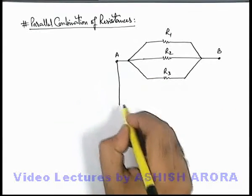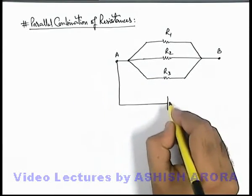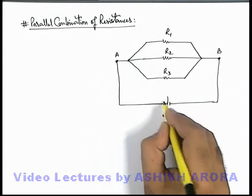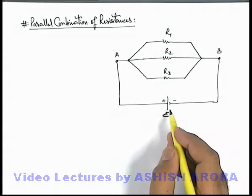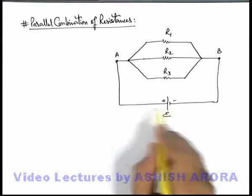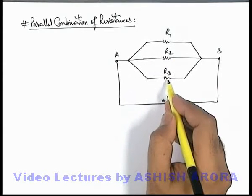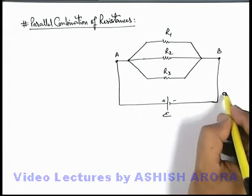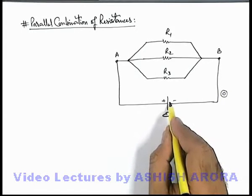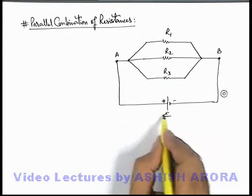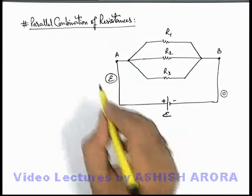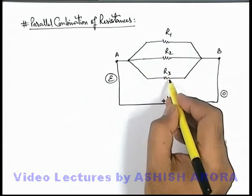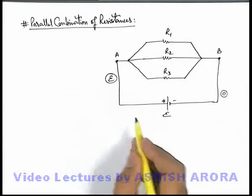To find the equivalent resistance, say we connect a battery across the combination, and the battery is of EMF e. In this situation, a potential difference e will be applied across these 3 resistances in parallel. If on the right side we consider potential to be zero volts, then on the left side — the positive side — the potential will be e volts. So across all 3 resistances, the potential difference remains the same.